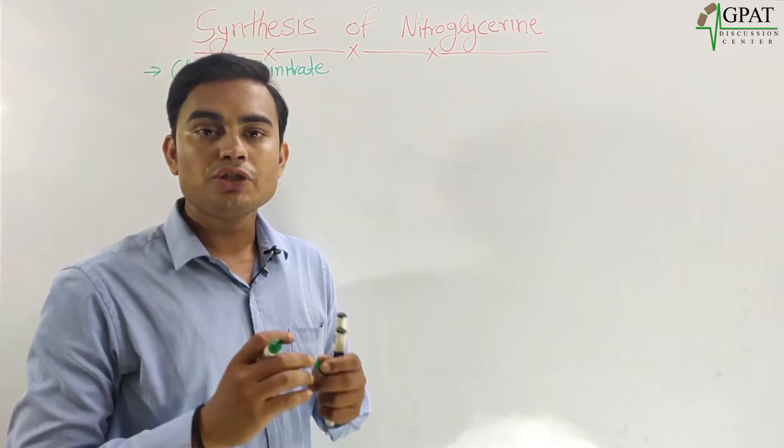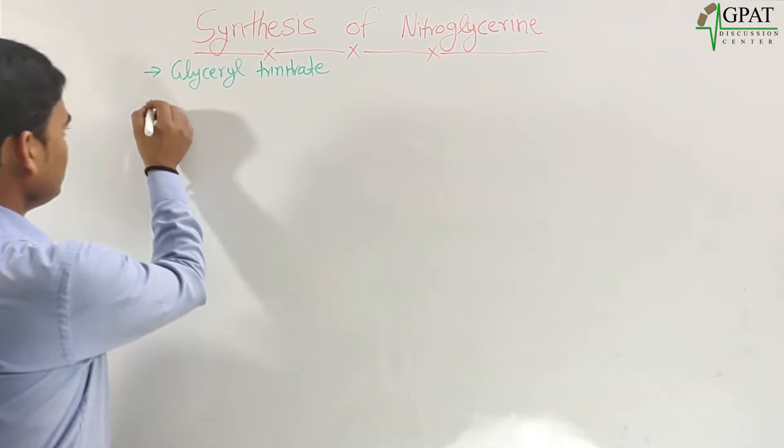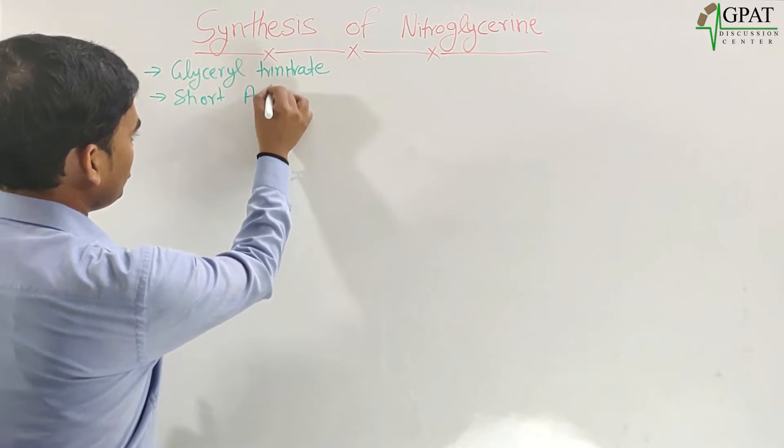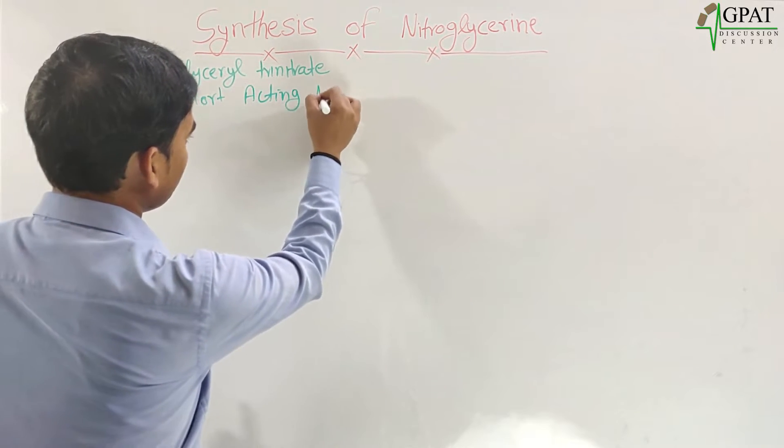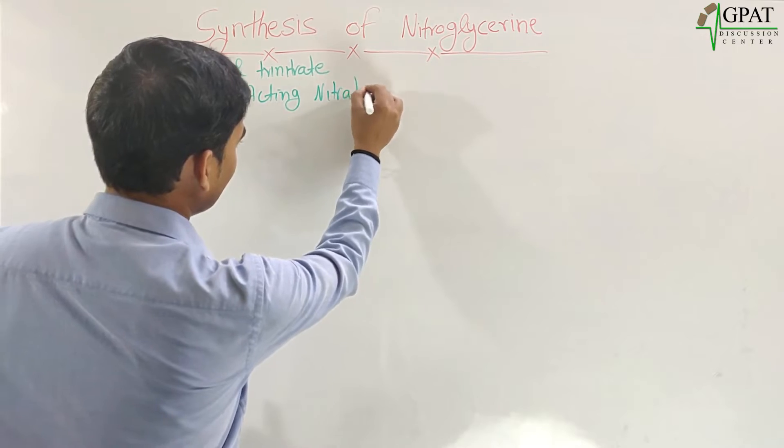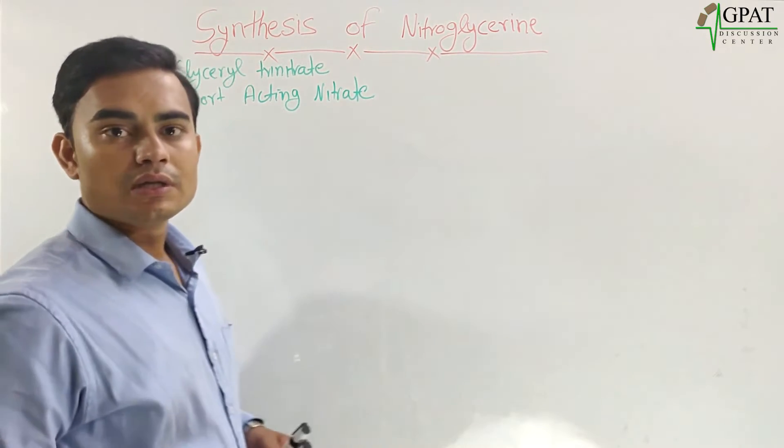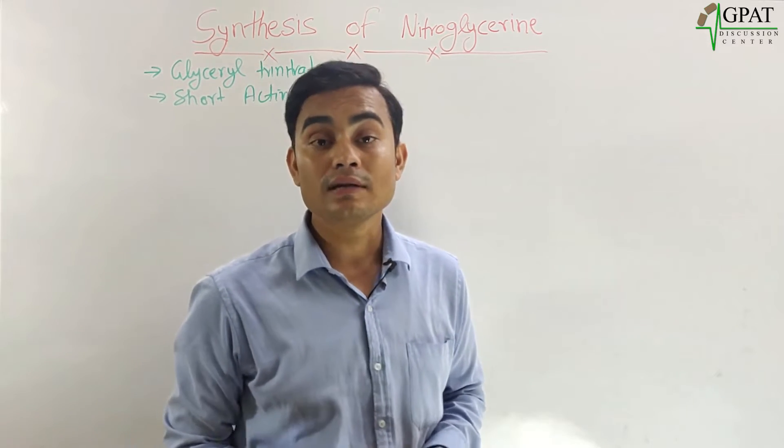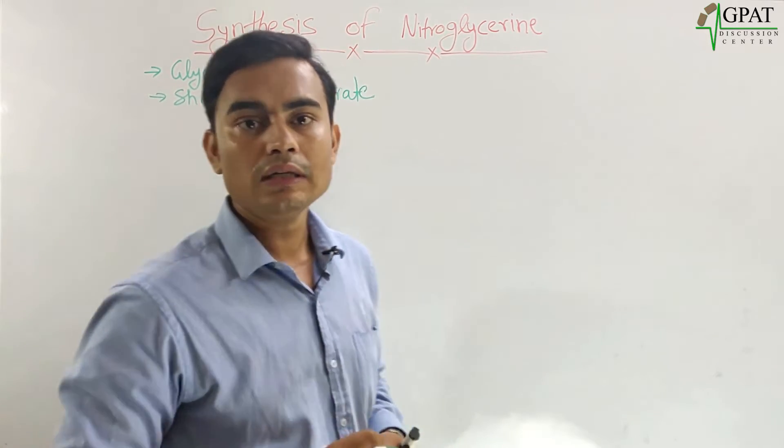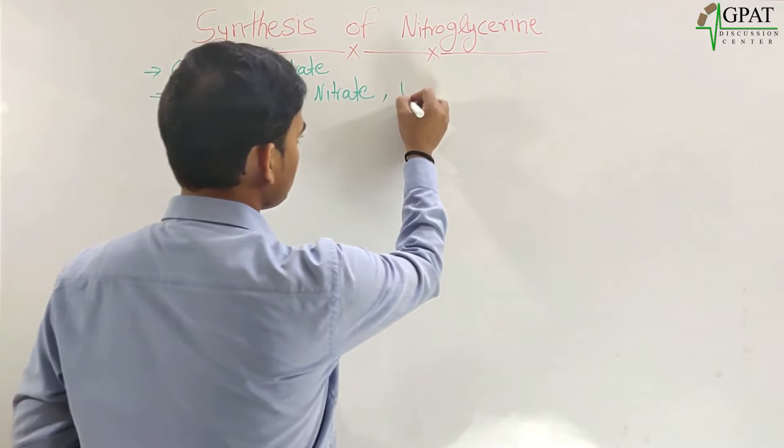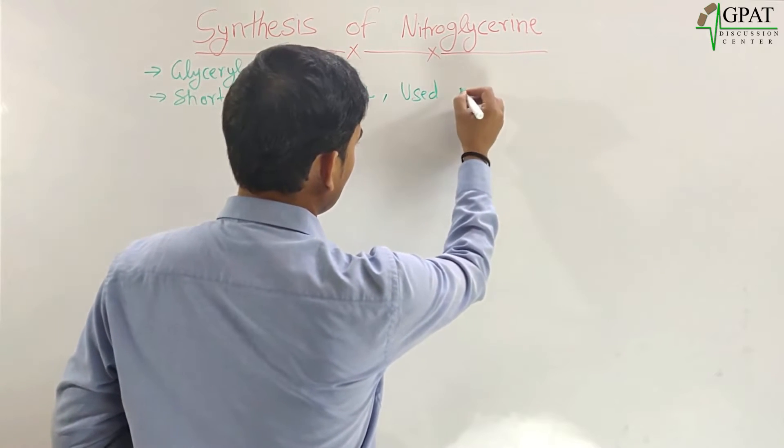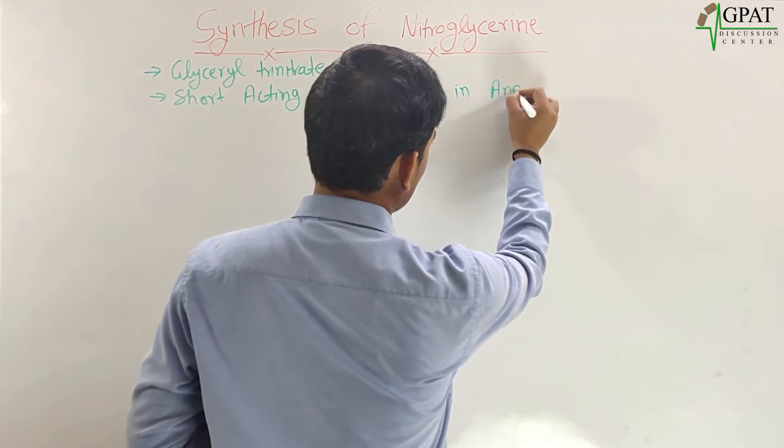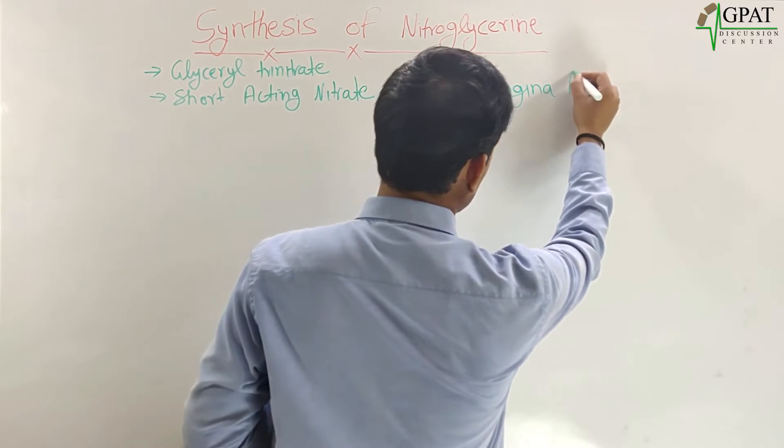Nitroglycerin is a short-acting nitrate. Mainly used in the treatment of angina. Also, it is known as the drug of choice for angina. Used in angina pectoris.